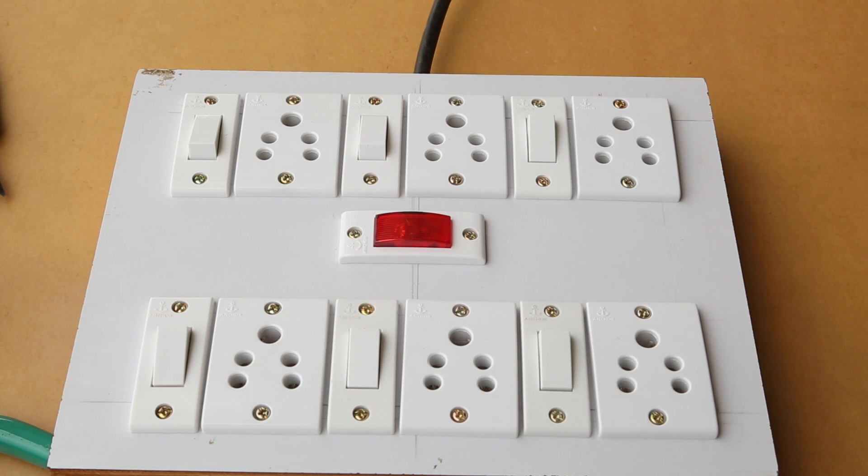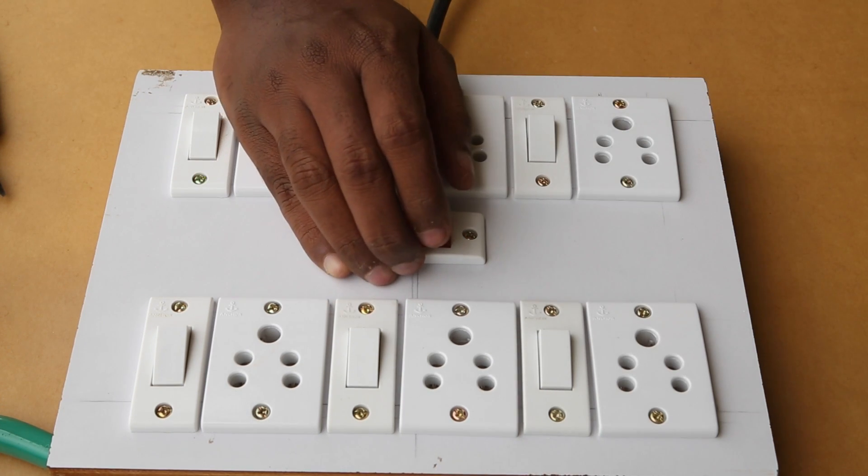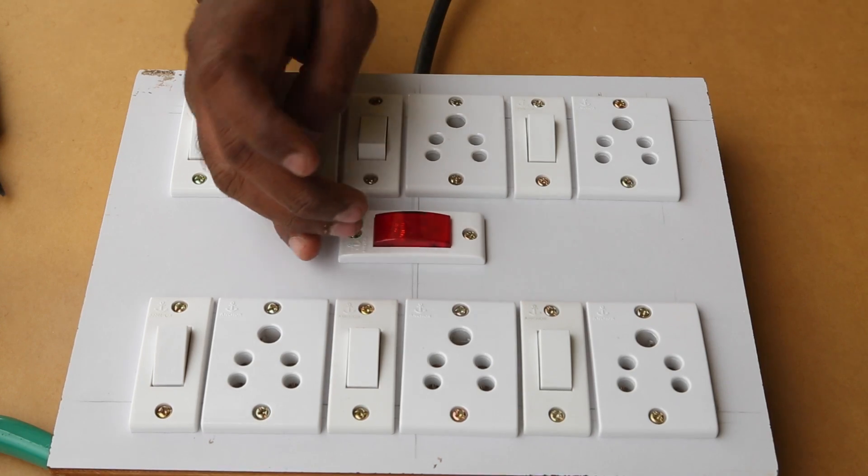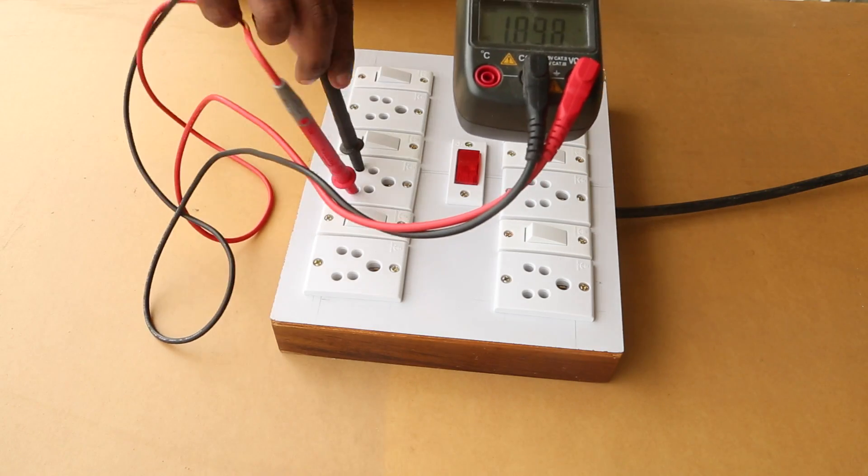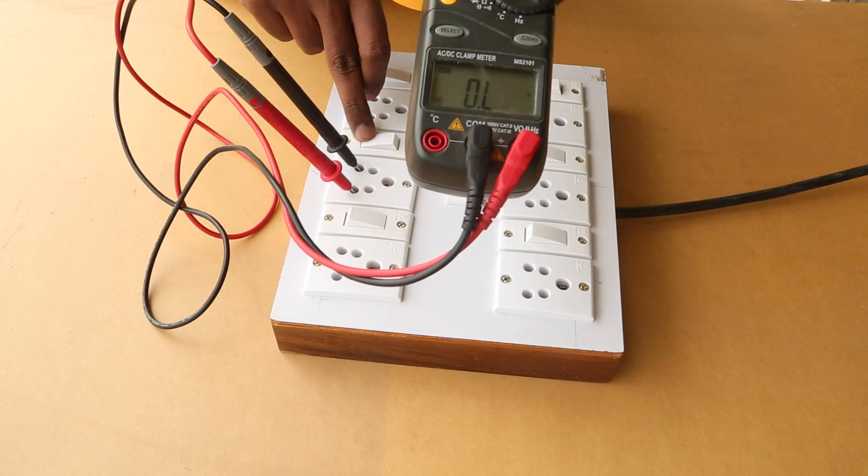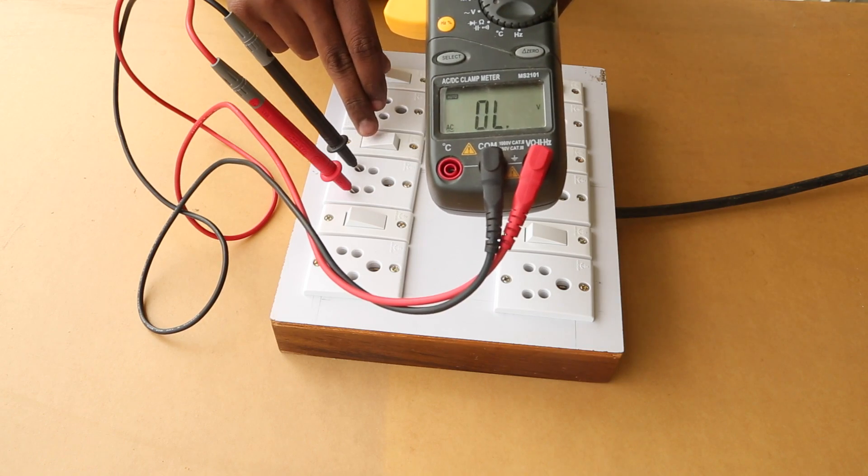When I turn on the power, you can see the indicator glow up. Here I connect the terminals from a multimeter to check if all is working. When I turn on the switch, the multimeter reads 240 volts. That's a good sign. I tested all the sockets in a similar way.